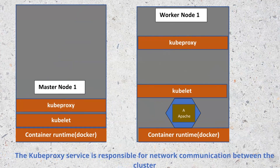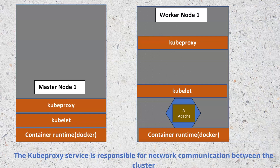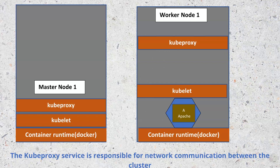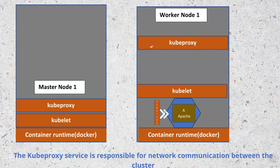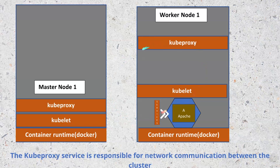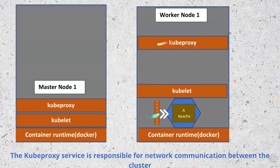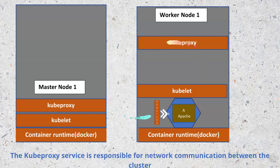Another service is the kube-proxy. The kube-proxy is responsible for network communication within and among the nodes. If there is a call, the kube-proxy forwards it from the Kubernetes service to the appropriate pod. Its algorithm works so that when a request is made on a node, it forwards that call to the particular pod inside the same node the call was made on, making the request faster rather than routing to another node, since the replica of that pod is in the same node.